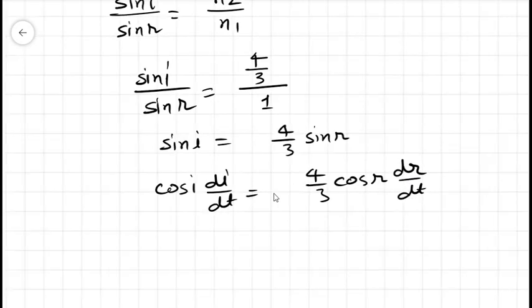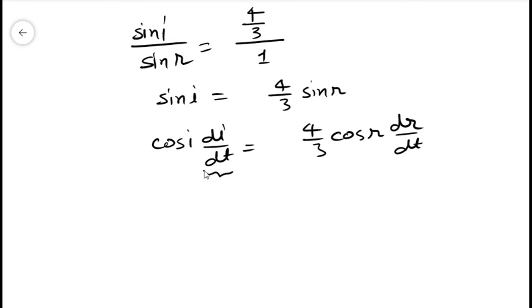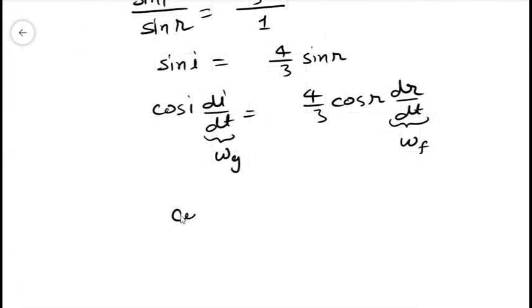The di over dt was the angular speed perceived by the person on the ground, that is omega g, and dr over dt is omega for fish. So cosine i omega g equals to 4 over 3 cosine r omega f.